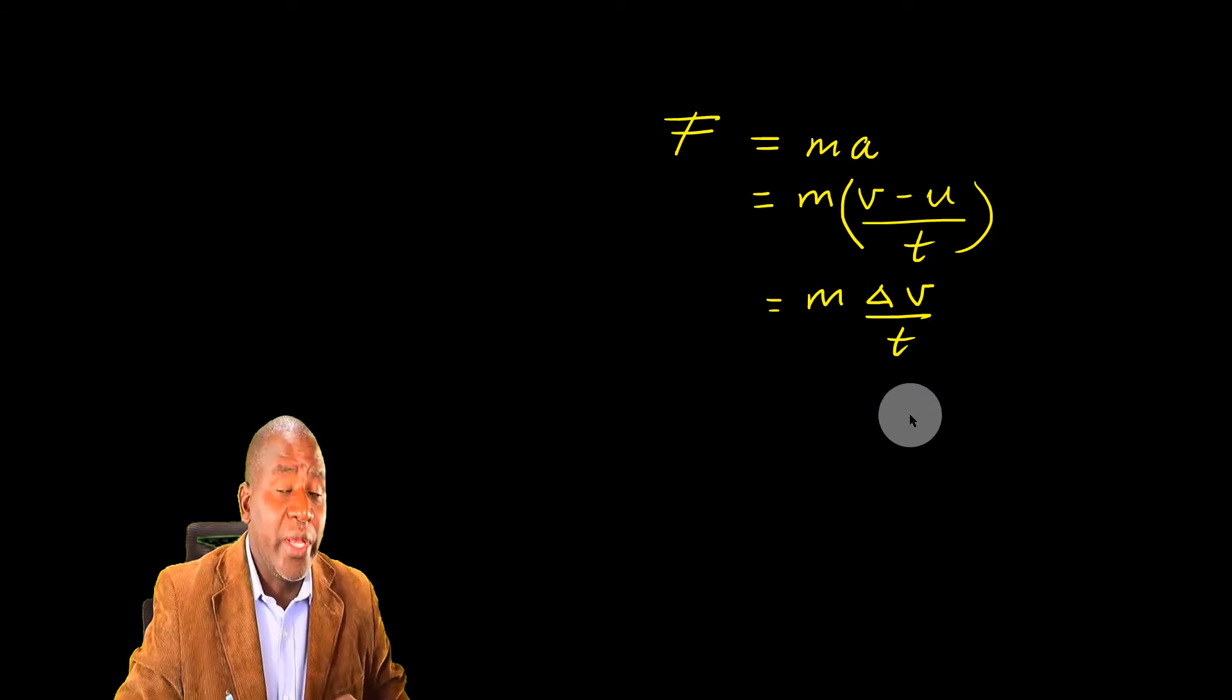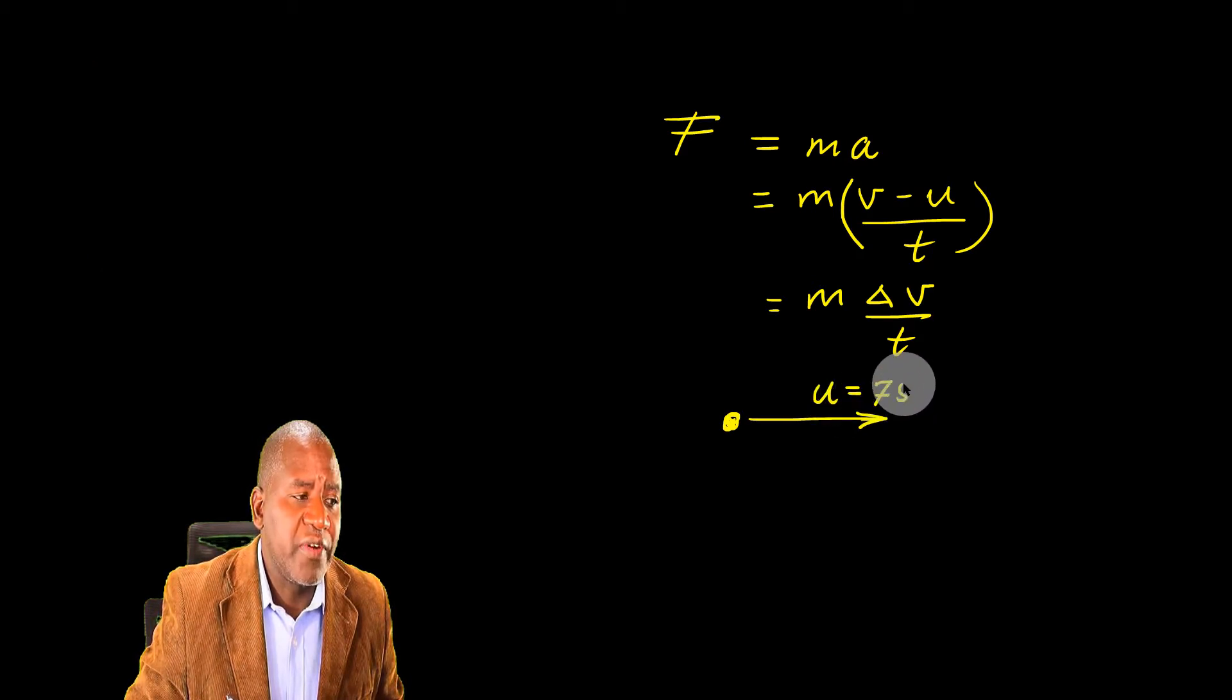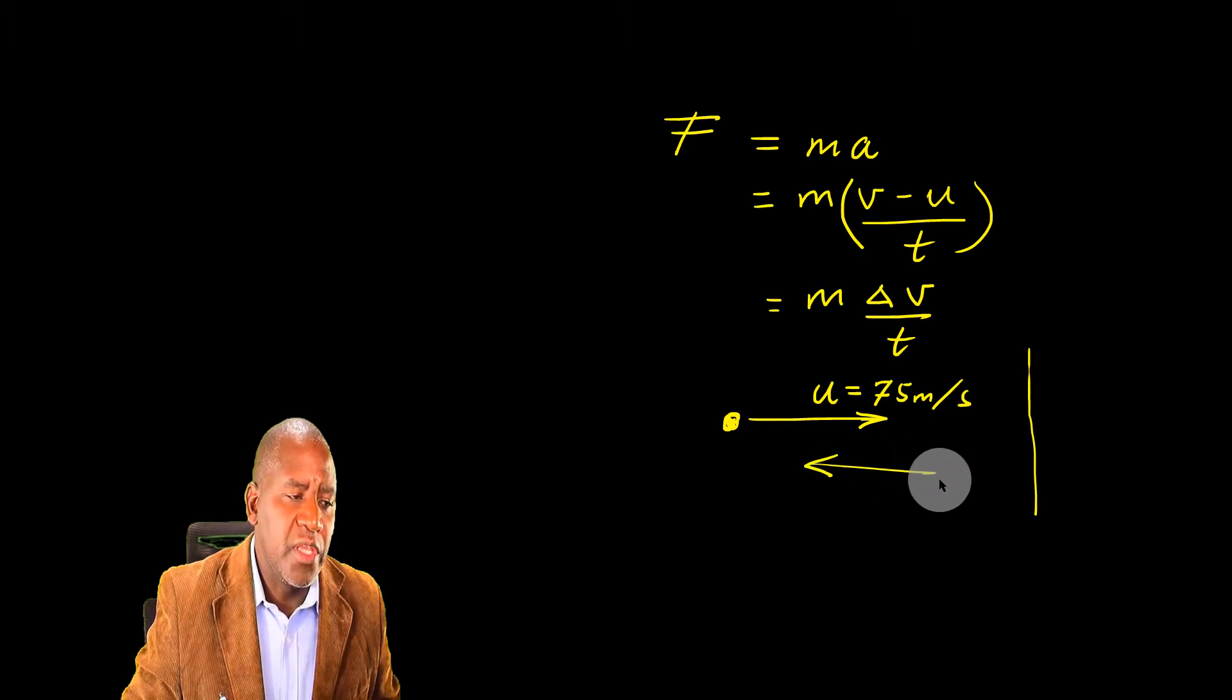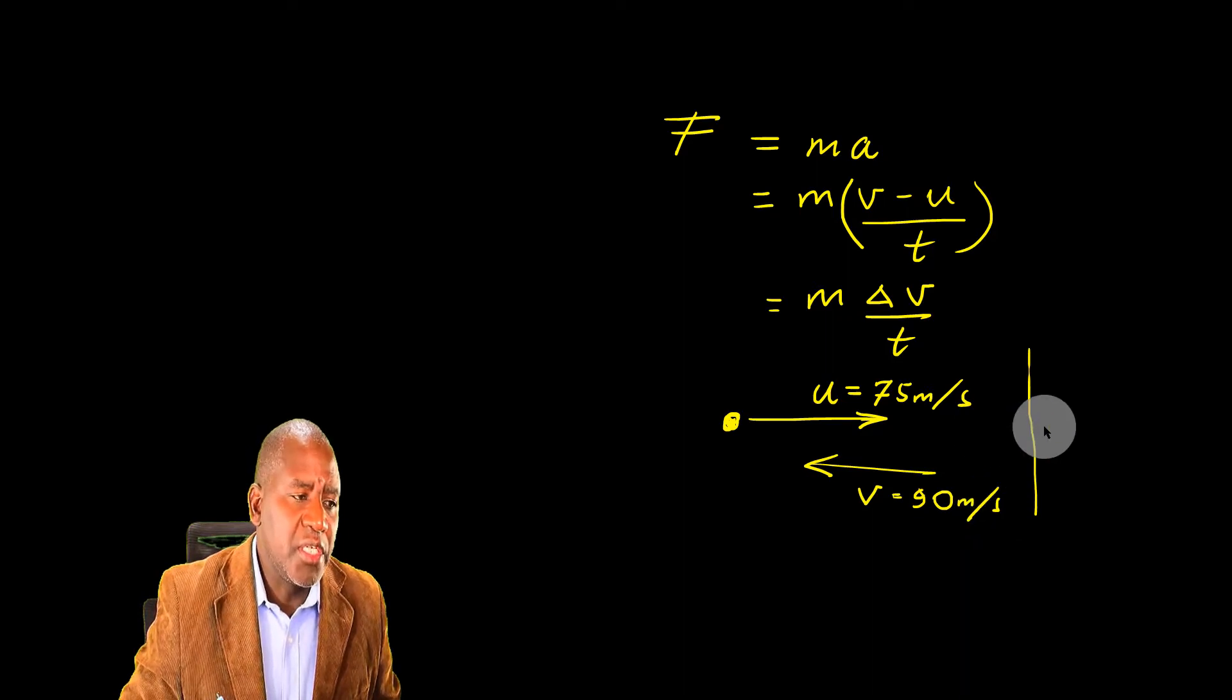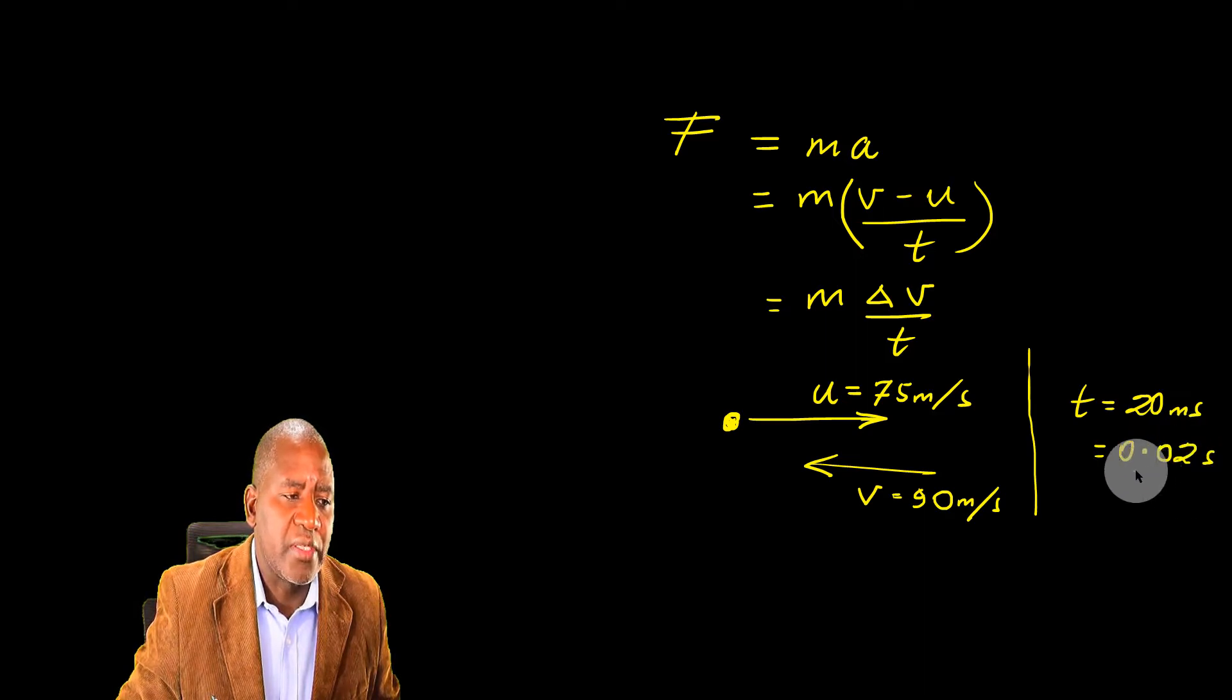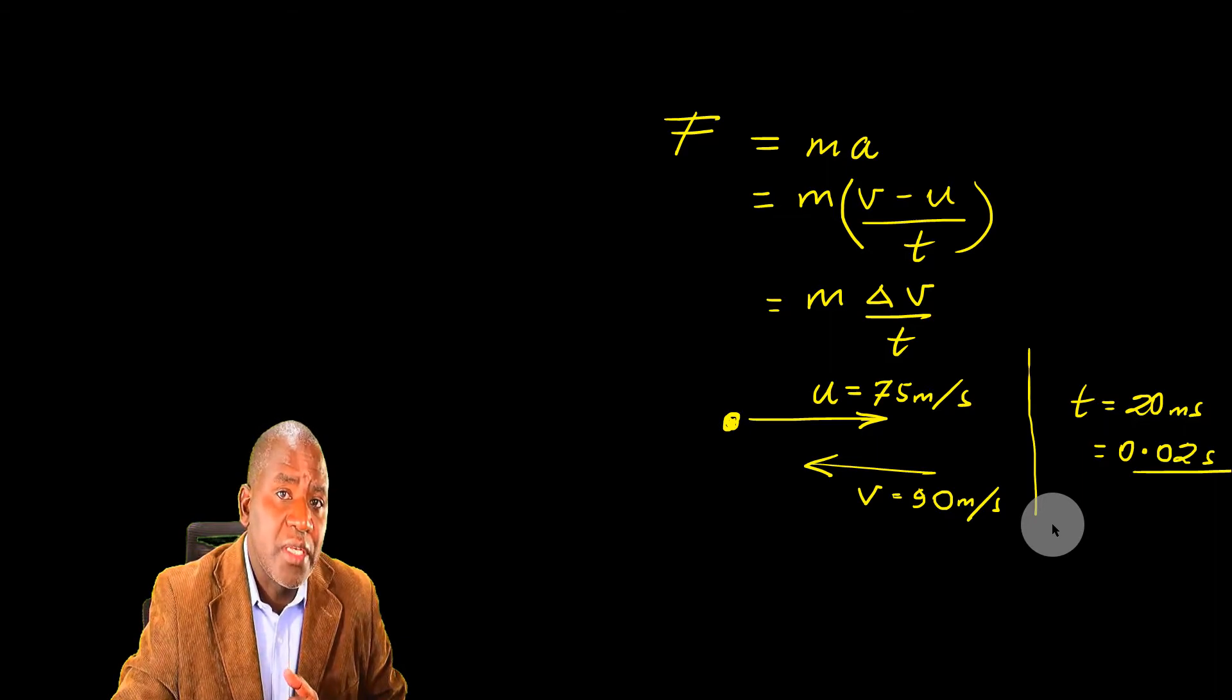Now when you look at this question, we've been told that this ball is approaching the wall with an initial velocity of 75 meters per second. It strikes the wall and bounces back in the opposite direction with a final velocity of 90 meters per second. It is in contact with the wall for a time of 20 milliseconds, which is simply 0.02 seconds. This is working backwards until you know which physical quantities you are supposed to use. Because when questions are given, it's not immediately obvious that the equation to use is this one.